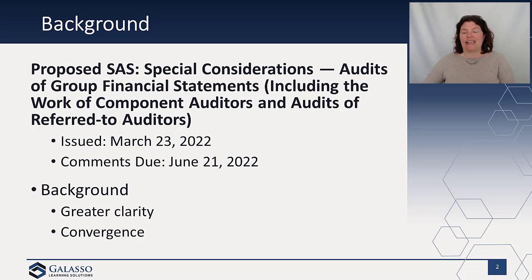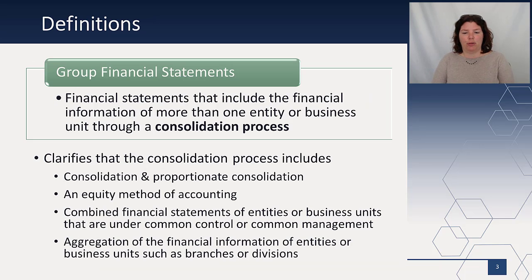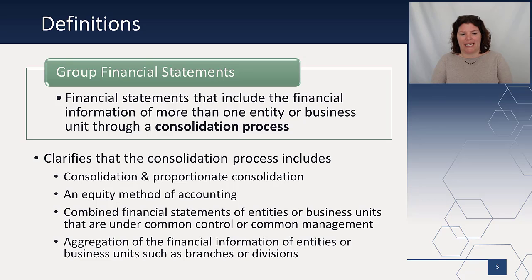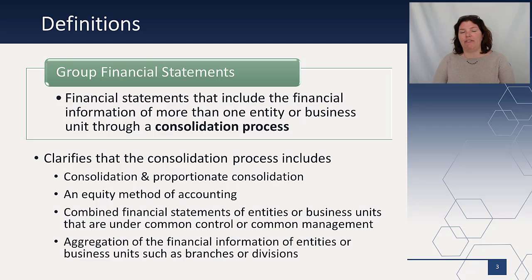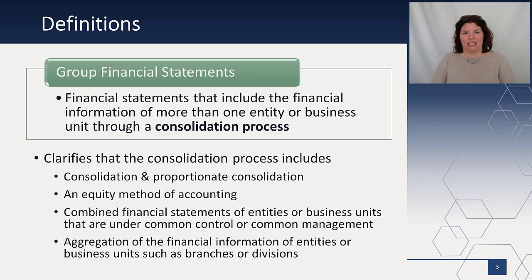One of the biggest changes you're going to notice is in definitions. The first is the term group financial statements — these are financial statements that include financial information of more than one entity or business unit through the consolidation process. But that doesn't necessarily mean full consolidation; it could be consolidation, proportionate consolidation, the equity method of accounting, combined financial statements, or aggregation of branches or divisions. So it's not just parent-sub relationships; it's really about aggregation risk.